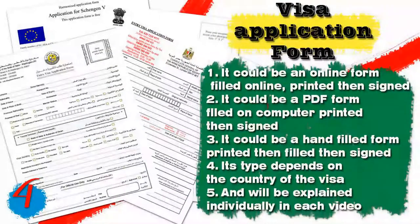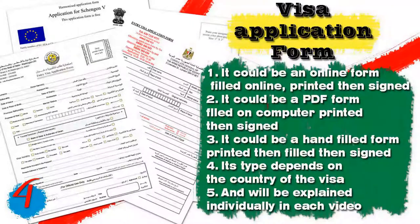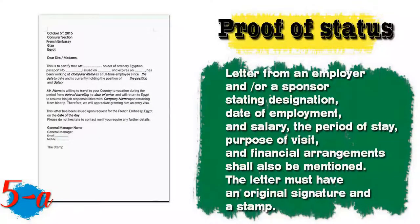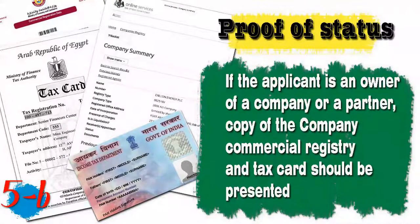Number four, you will need the visa application form. It can be an online form filled electronically, printed, then signed; or a PDF form filled on a computer, printed, then signed; or a hand-filled printed form that is then signed. Number five, you will need a proof of status. If you are an employee, you need a letter from your employer or HR office stating your designation, date of employment, salary, period of stay, purpose of visit, and financial arrangements. The letter must have an original signature and stamp. If you are a business owner or partner, you need a copy of the company's commercial registry and tax card.